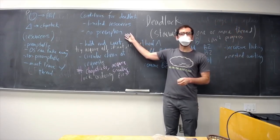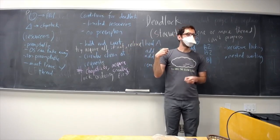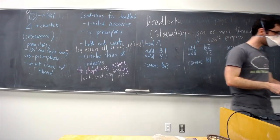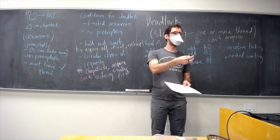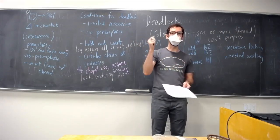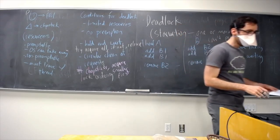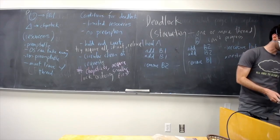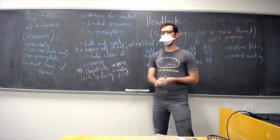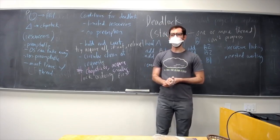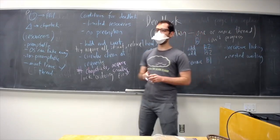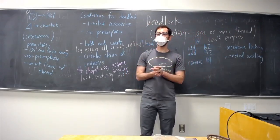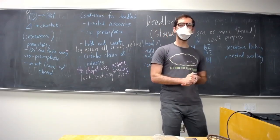Preemption — allowing philosophers to steal chopsticks — can also avoid deadlock, but if we're thinking about locks, we probably don't want a thread to steal a lock from another thread, since the whole point of a lock is to prevent interference. Although you could imagine some set of priorities among cooperating threads where if one wanted a lock it would cancel the other thread's operation. Next time we'll talk about the Banker's Algorithm — a way to avoid any possible deadlock with some knowledge. Keep working on labs four and five; design doc due Thursday; I have office hours tomorrow night.